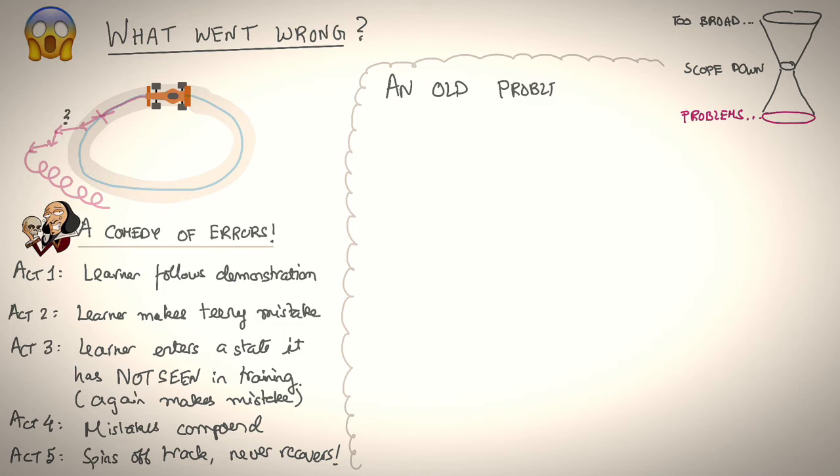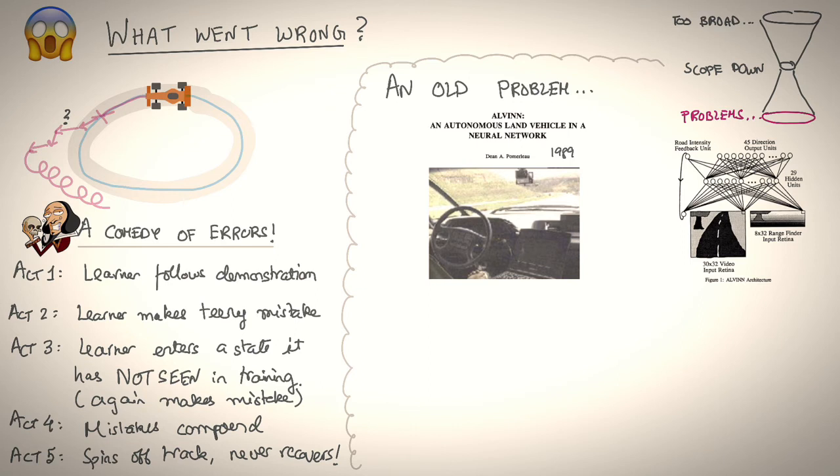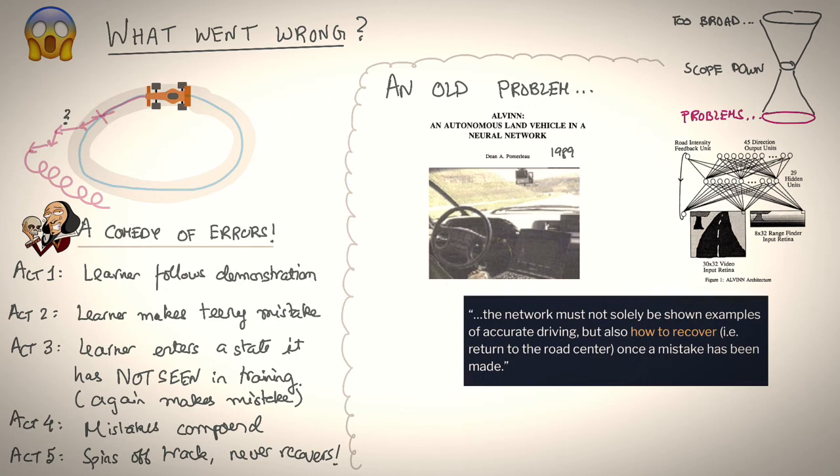So back in the late 80s, Dean Pomerleau at Carnegie Mellon wrote a paper titled ALVIN, which was the first self-driving car that used end-to-end learning. It mapped an image and range LIDAR to steering angles. And he made a really interesting observation that in some ways gave birth to a phenomenon in imitation learning. In his words, he says, the network must not solely be shown examples of accurate driving, but also how to recover, that is, return to the road center once a mistake has been made. Sounds awfully familiar to the problem we just talked about, where if the network only ever sees driving data of how the human drives, it never really learns to recover from mistakes.